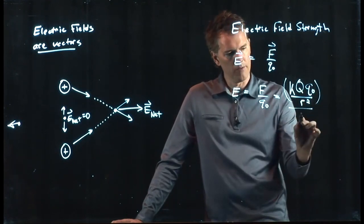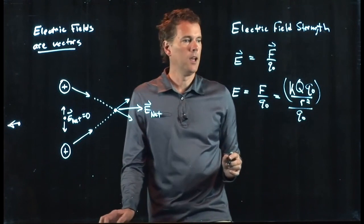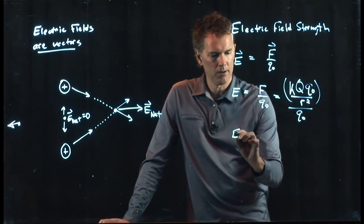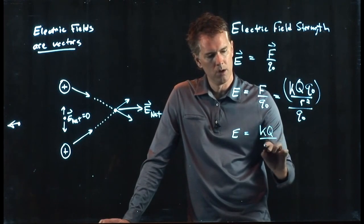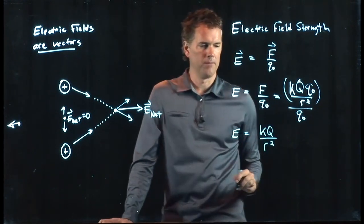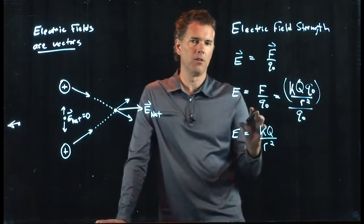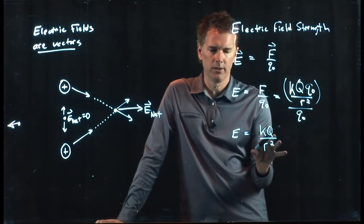And all of that is going to be divided by Q naught. And so the Q naughts cancel out and we get KQ over R squared. This is the magnitude of the electric field.